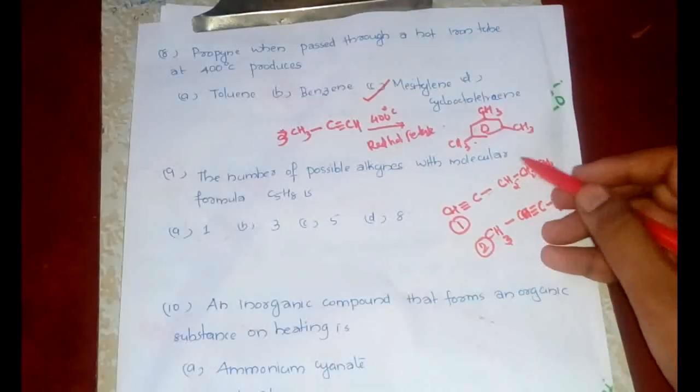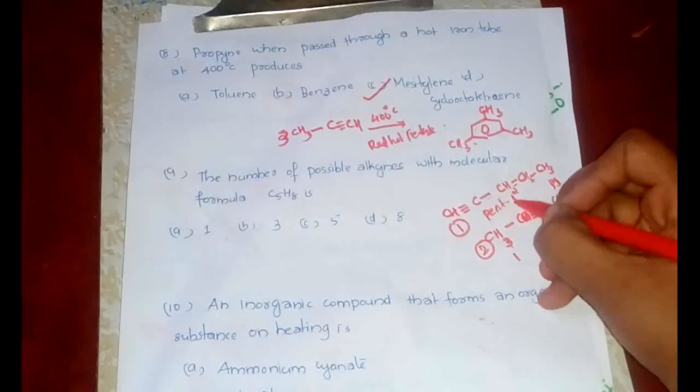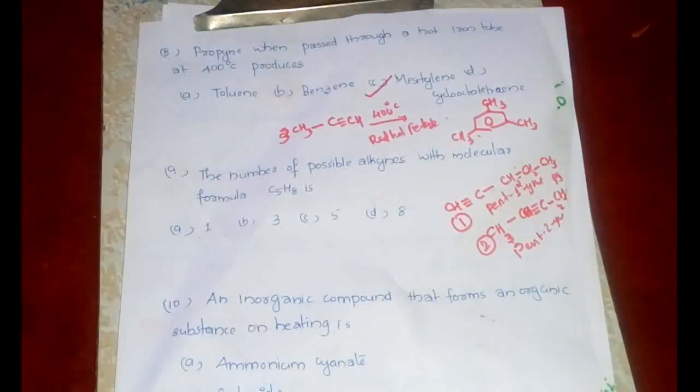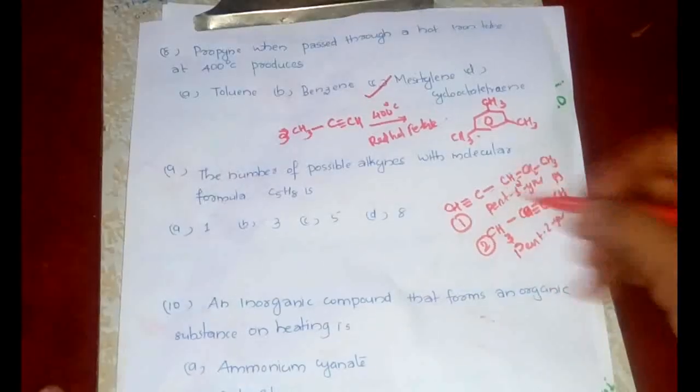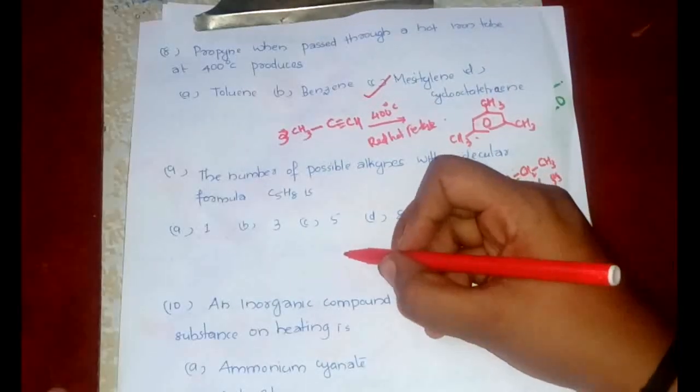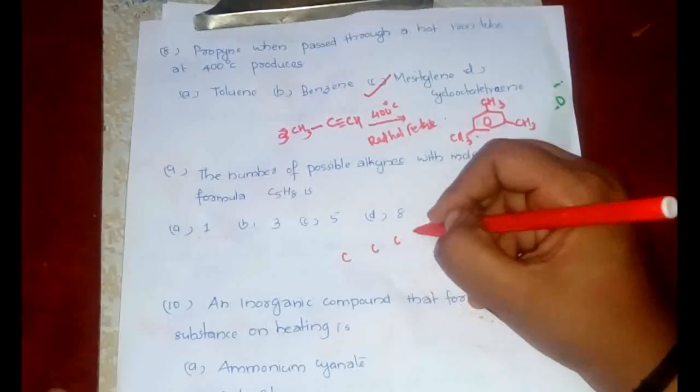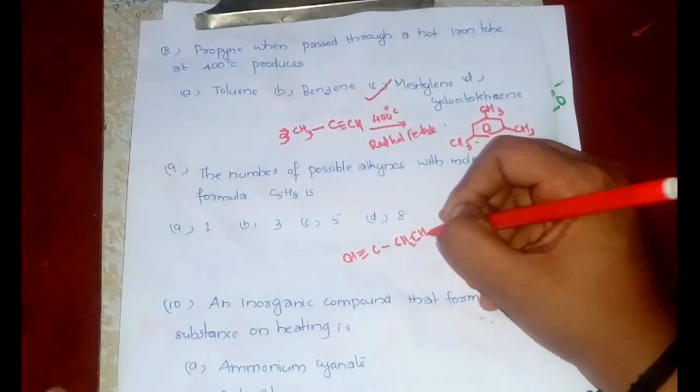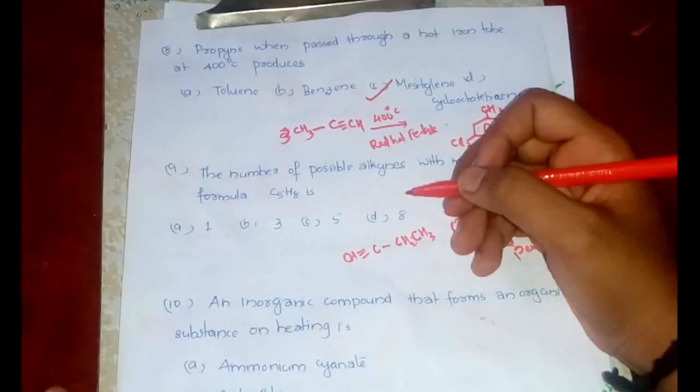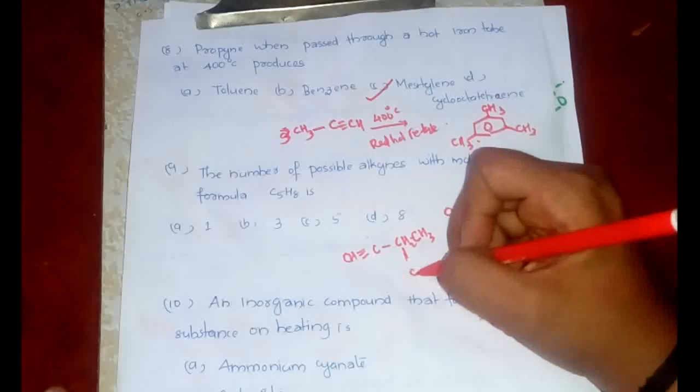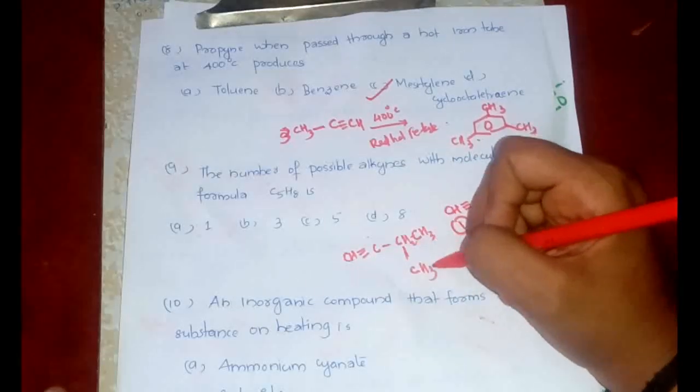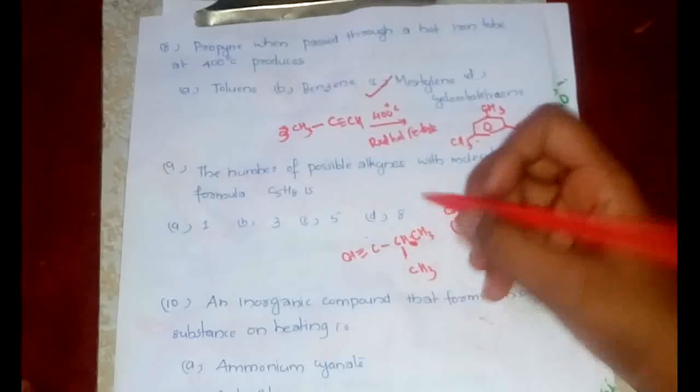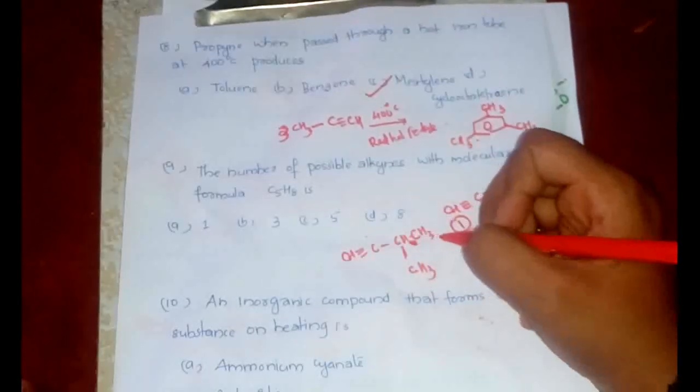Now let's see what else can be done. If we again shift this further, it makes no change. This is pent-1-yne, this is pent-2-yne. If we again shift this, it again results in pent-2-yne only. There won't be any particular change. So without any side chain, these are the two possible. Now let's see with which side chain what happens. Let's write 4 carbons in a row: 1, 2, 3, 4, triple bond. We have CH≡C-CH2-CH3, and let's give the substitution here: CH3.